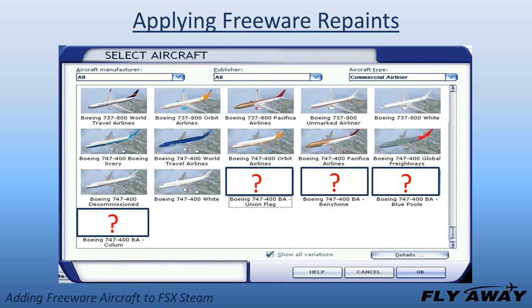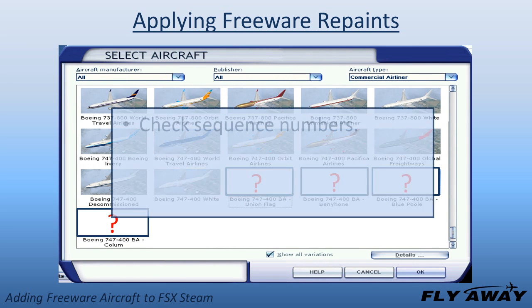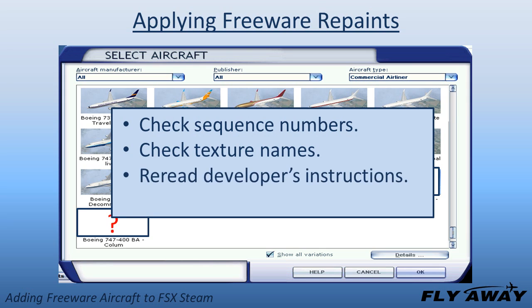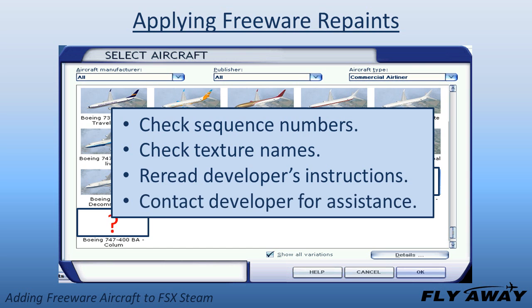If your repaints don't appear properly in FSX STEAM, check the sequence numbers and the texture names. Also, read the developer's instructions again to be sure you've followed them correctly. If you are sure everything is correct but your repaints still don't appear, contact the repaint developer for assistance.